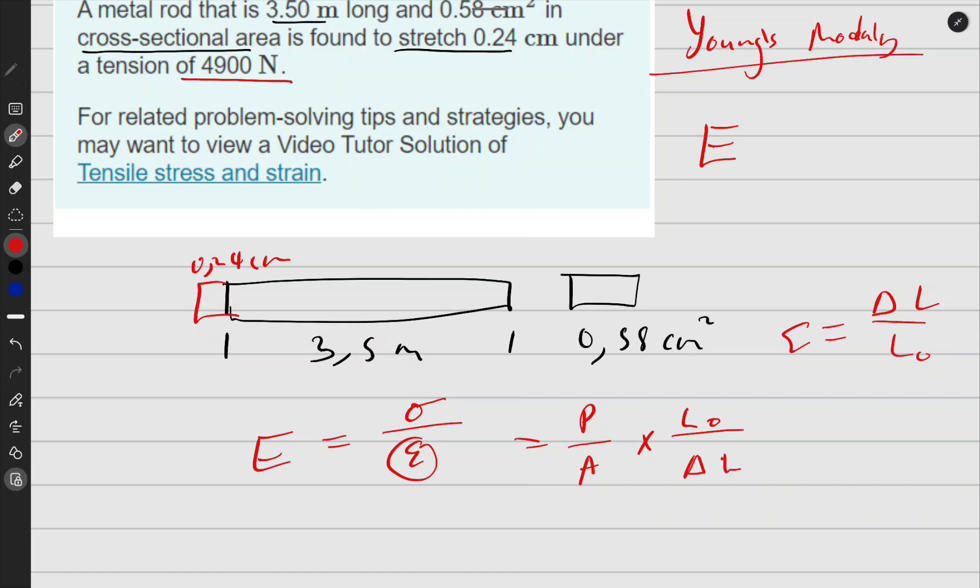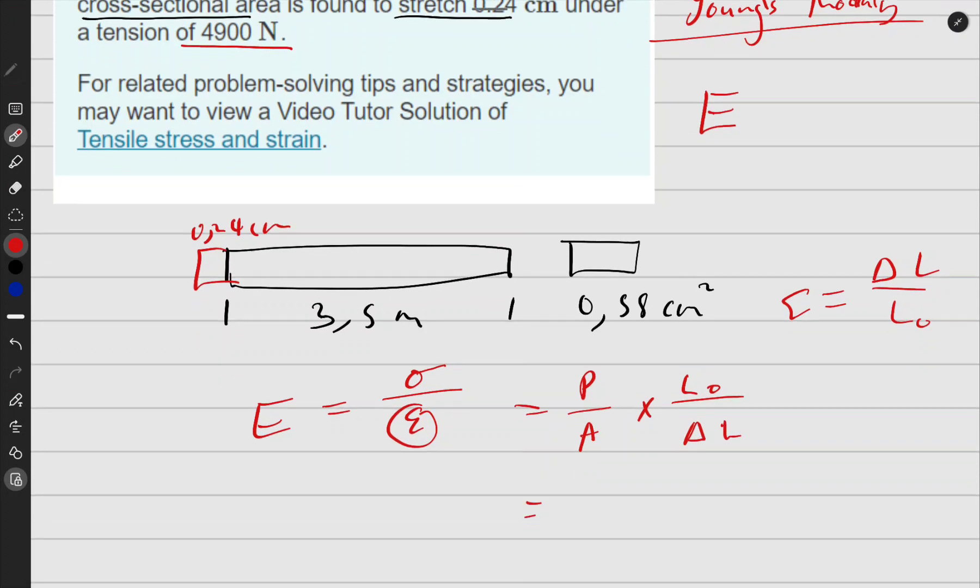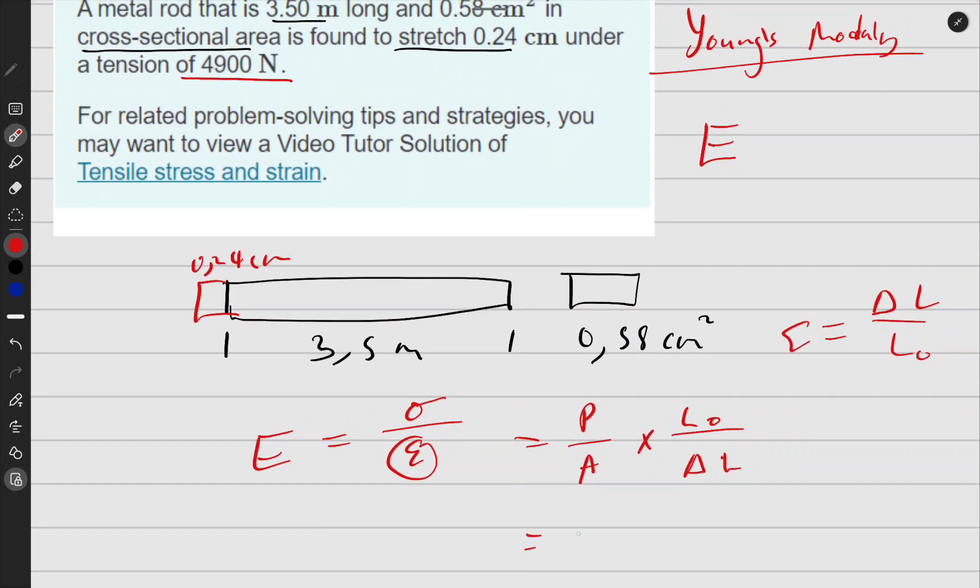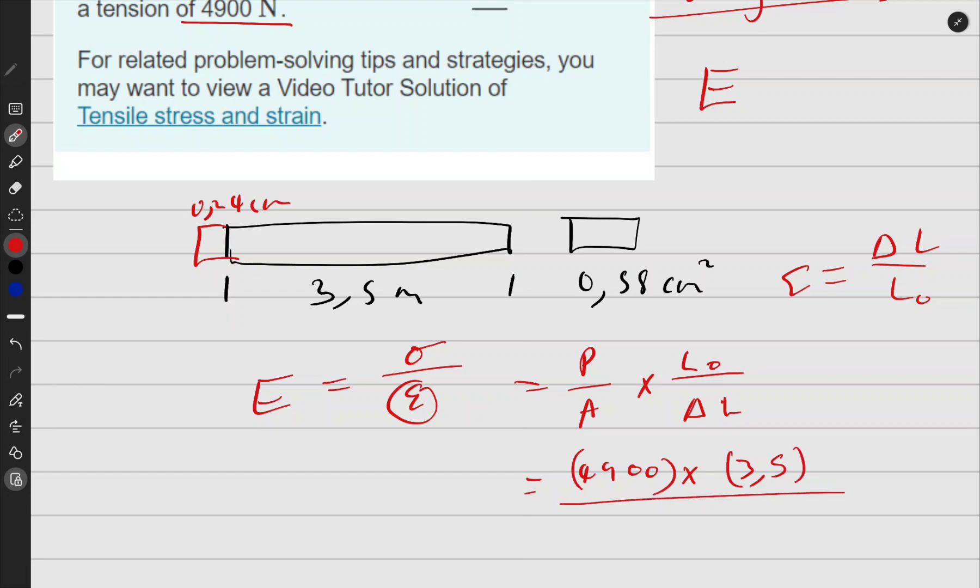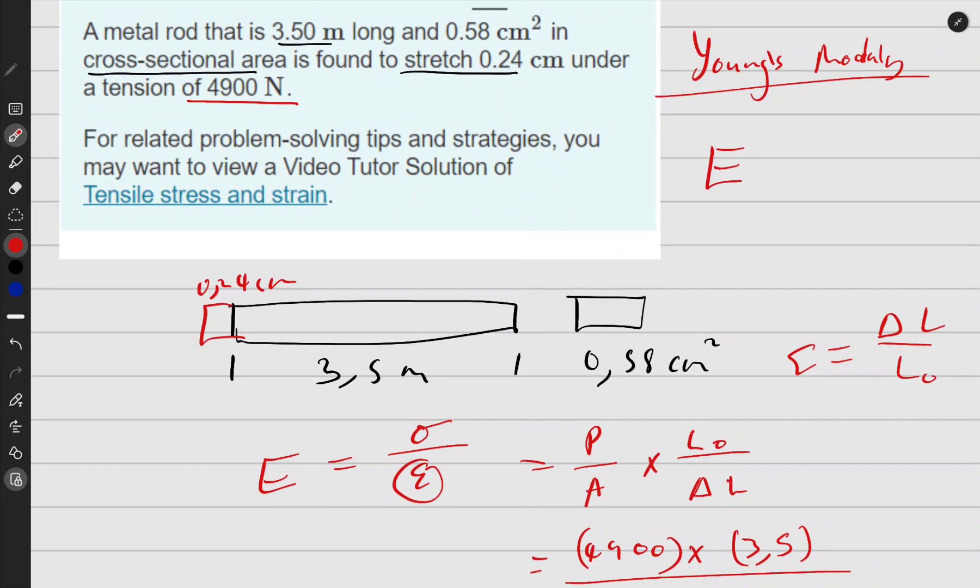So now from here I can put all my data. P, the force, that's given there: 4900 N. Times initial length, it's given here: 3.5 m. This is all over the cross-sectional area, but now it is in centimeters.